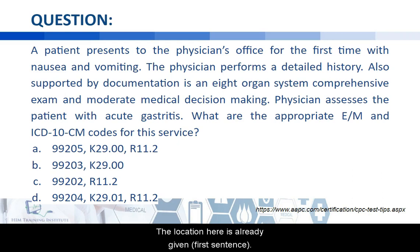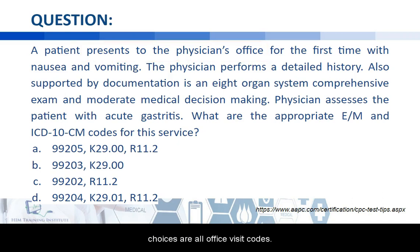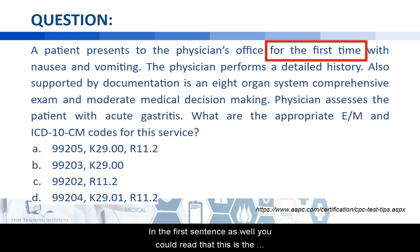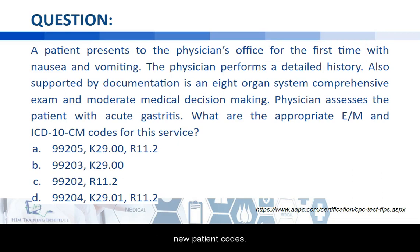The location is already given in the first sentence — it's in the physician's office, and all the choices are office visit codes. The type of patient is also in the first sentence: this is the patient's first time to be seen by this doctor, hence this is a new patient. All four choices are new patient codes.